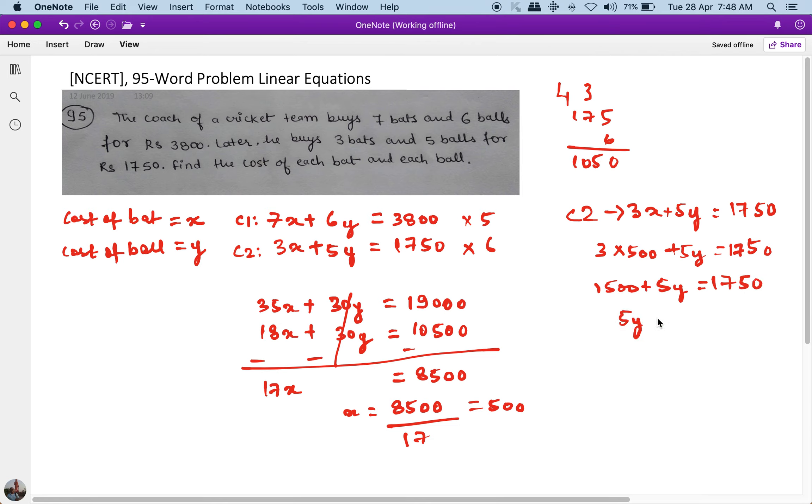So 5y equals 250, and y equals 250 divided by 5, which equals 50. The answer is: the cost of the bat, x, equals 500 rupees, and the cost of the ball is 50 rupees. This, my friends, is the solution to the question.